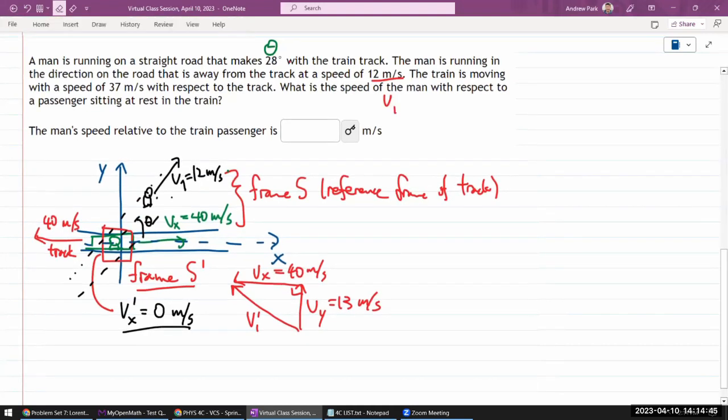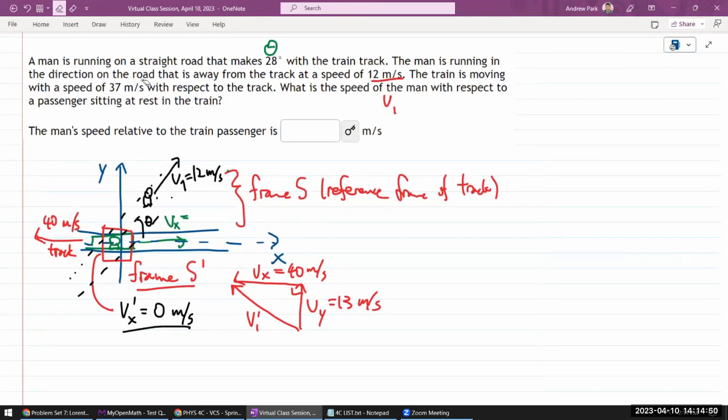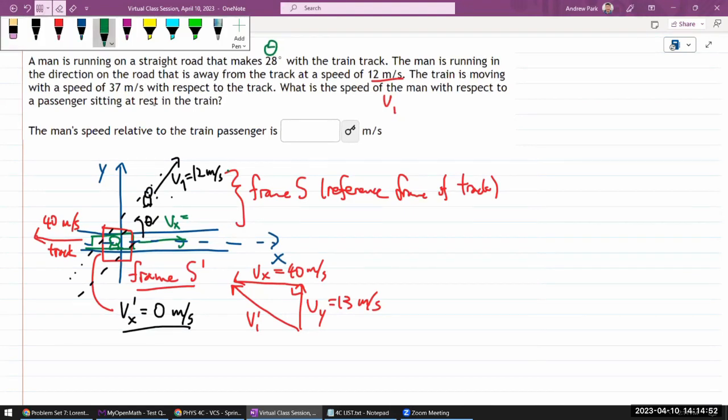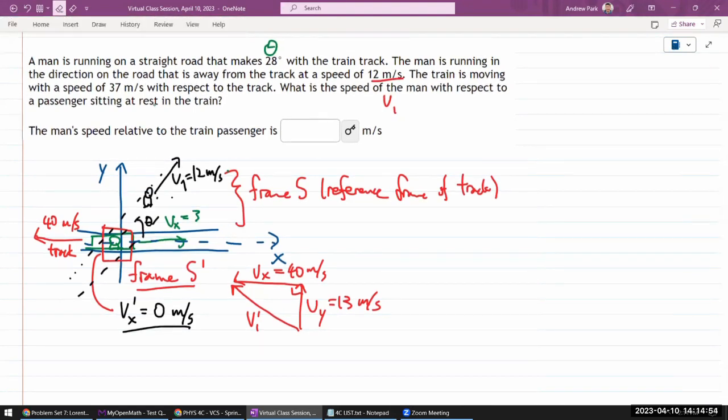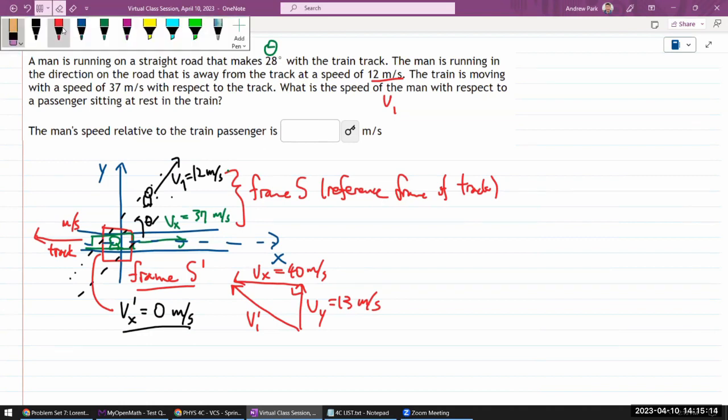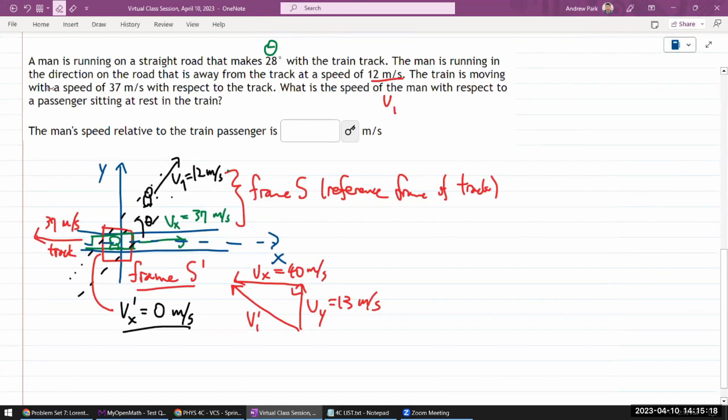Okay. The train is moving with a speed of 37 meters per second with respect to the track. What is the speed of the man with respect to a passenger sitting at rest in the train? So, again, for the passenger, this v_x prime is zero because passengers moving in the train from that prime frame S prime frame. It is the track that is moving backward at 37 meters per second.